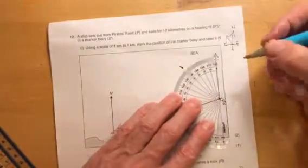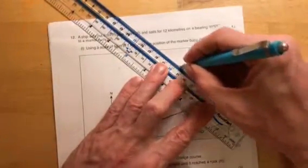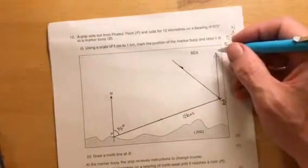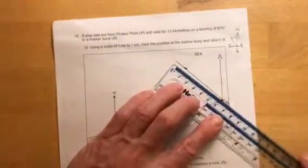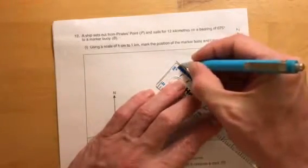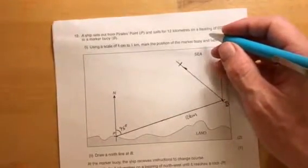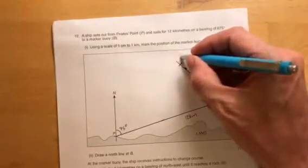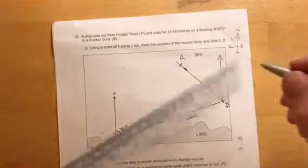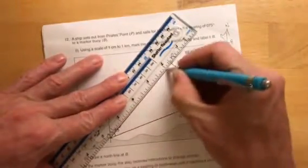It's 45 degrees. And now it says 6 kilometres, so 6 centimetres. There's the rock. Then it says back to Pirate's Point. From there, back.